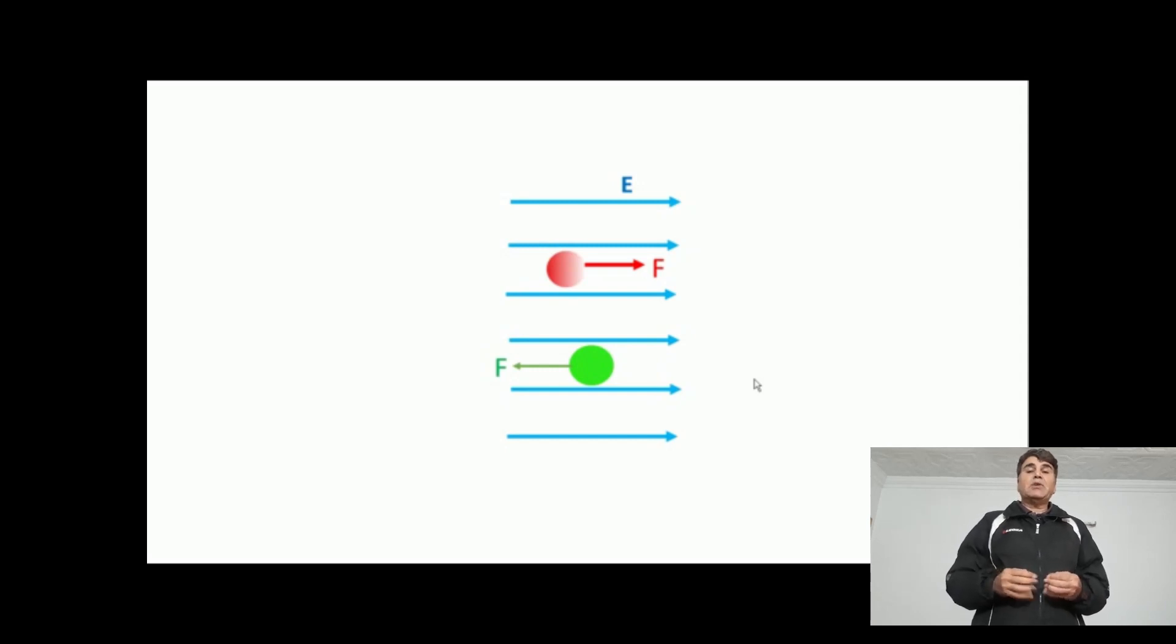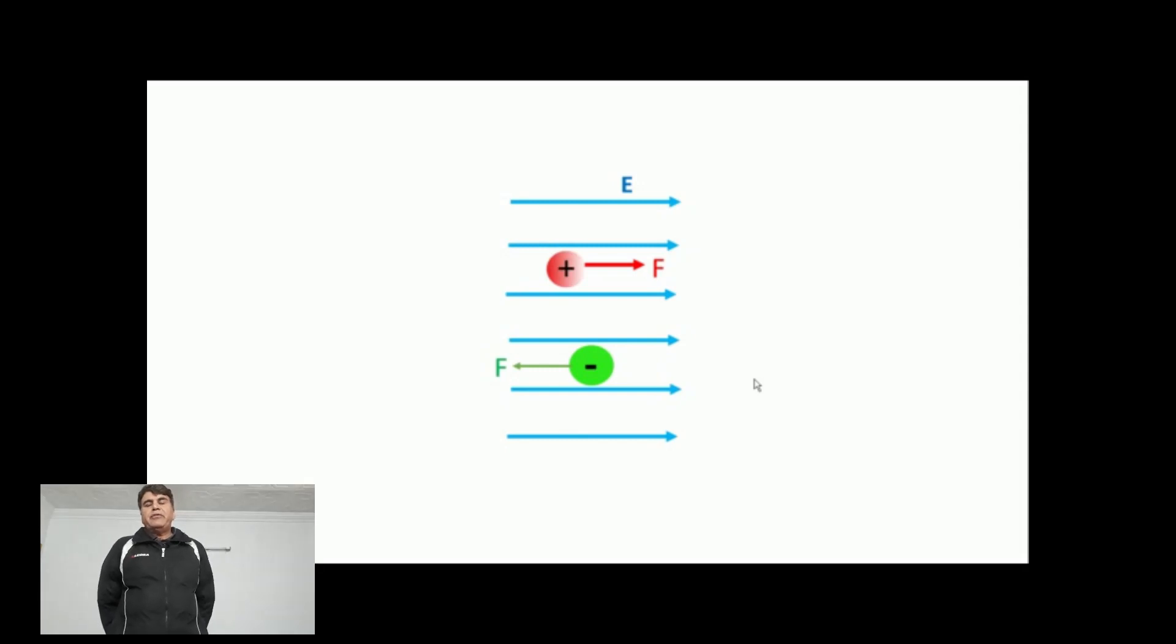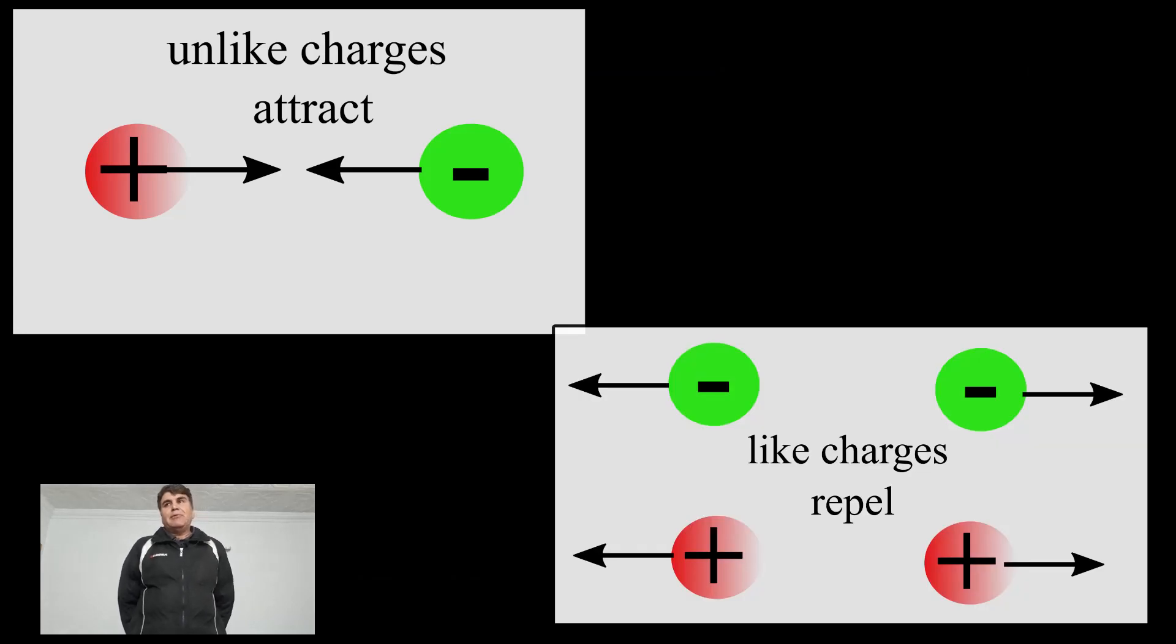One kind was called positive and the other was called negative. Alongside, we were introduced to another property of charges: unlike charges attract and like charges repel each other.